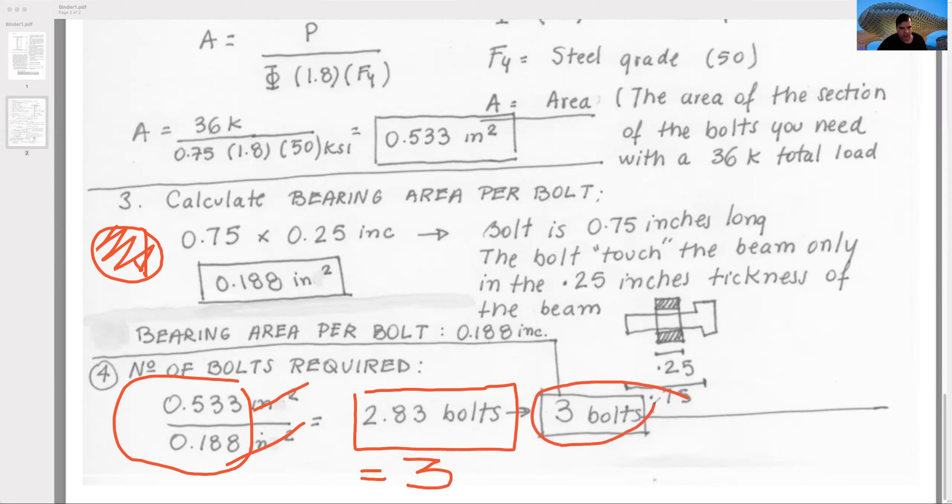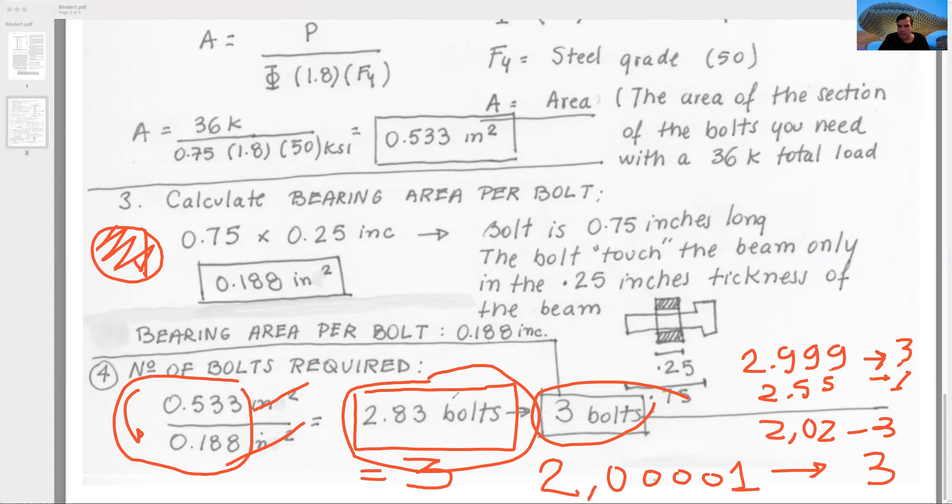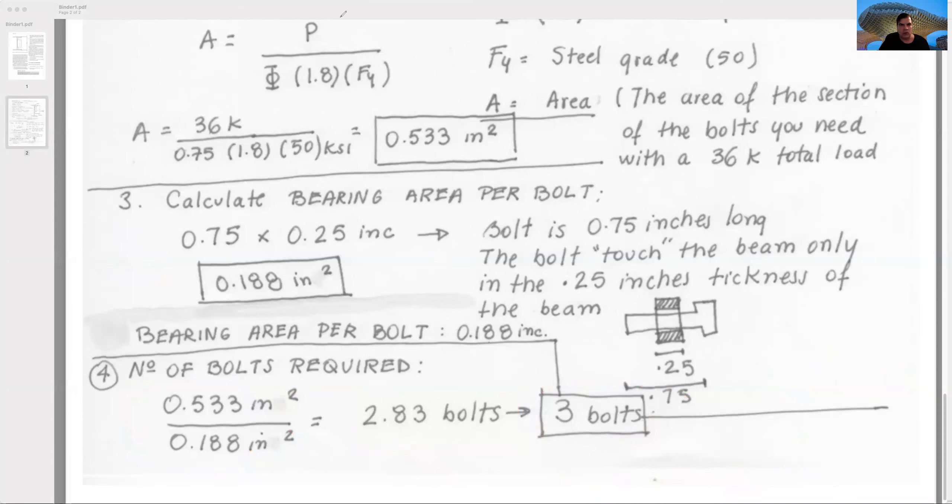2.83 is equal to 3. The answer is 3 bolts. Be careful: if your answer by coincidence when you do this operation is 2.000001, this is bigger than two, you cannot use two bolts, you need to use three. If your answer is 2.999, this is less than three, you can use three. If it is 2.55, it is three. If it is 2.02, it is 3. It is always the number that is up. Please don't write 2.83 bolts in this answer because I will not accept decimals. Your answer will be wrong. The number needs to be exact. This concludes this presentation. My best wishes to all of you.